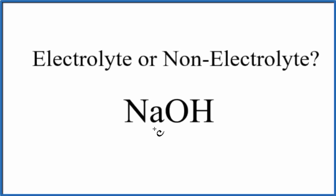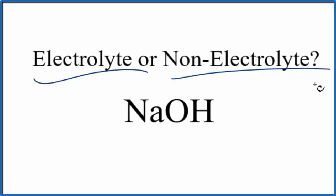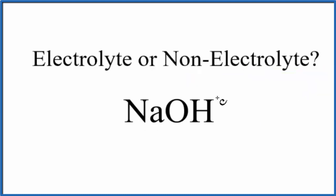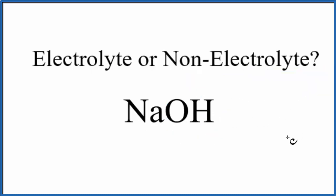The question is whether NaOH is an electrolyte or a non-electrolyte. So this is sodium hydroxide. When we look at sodium hydroxide, we first need to figure out what type of compound this is.